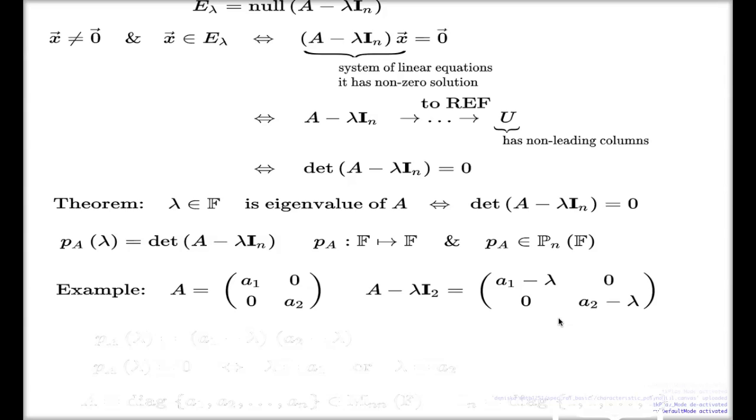That's how easy we can compute determinant of a diagonal matrix. So, if I go after determinant of this matrix, which is a diagonal matrix, my characteristic polynomial is a simple product of two linear factors.